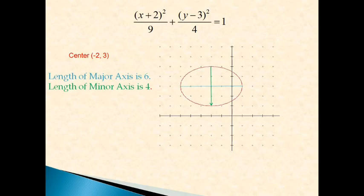Finally, a recap: our center is (−2, 3), the length of the major axis is 6 with 3 units on each side of the center, and the length of the minor axis is 4. Hope this helps, and if you have any questions, please see me in class.